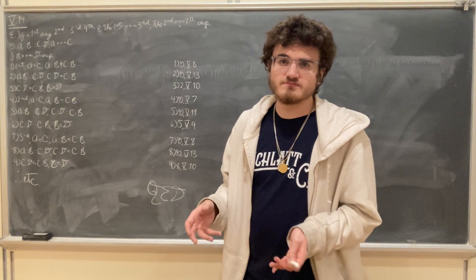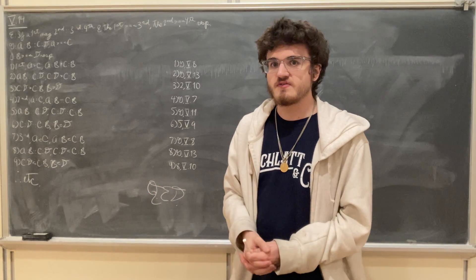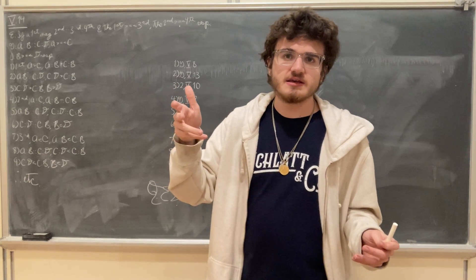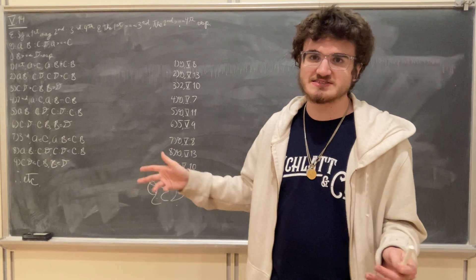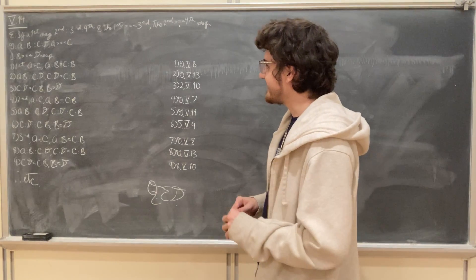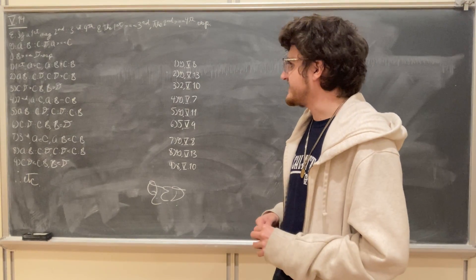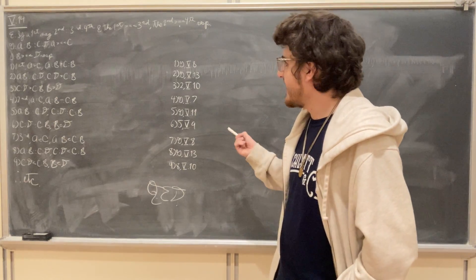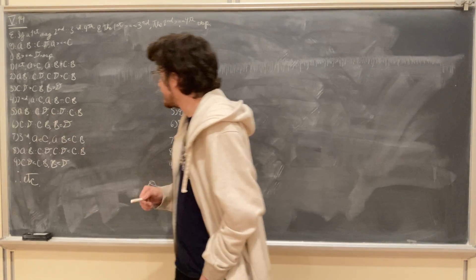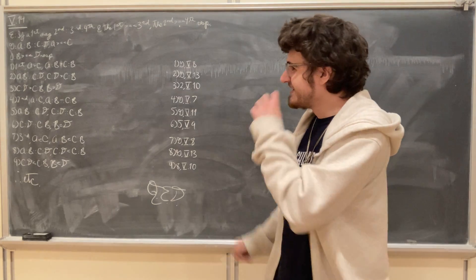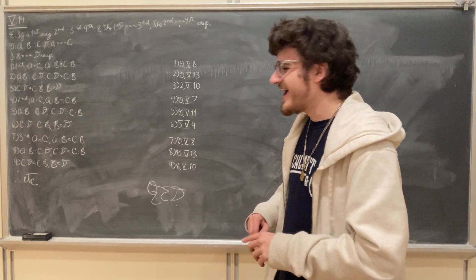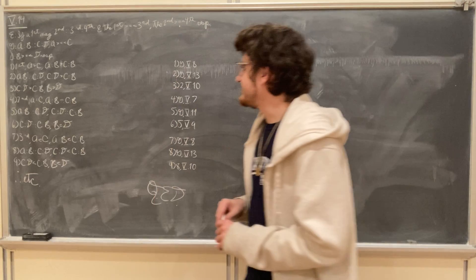The text of Euclid says that simply by similar reasoning we can arrive at the other two cases, but I'm going to go through the demonstrations in full. So next, let a be equal to c. Now, a being equal to c, we know by Proposition 5.7 that equal magnitudes have to the same the same ratio, and so a to b is going to be the same ratio as c to b.